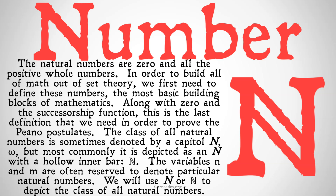The natural numbers are zero and all the positive whole numbers: zero, one, two, three, four, five, six, etc. In order to build all of math out of set theory, we first need to build and define these numbers, which are the most basic building blocks of all mathematics.